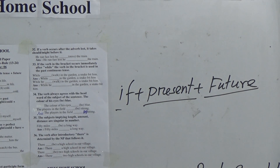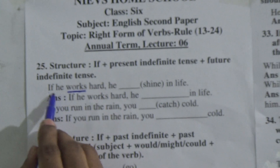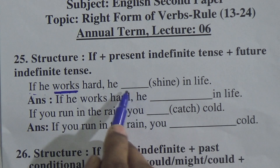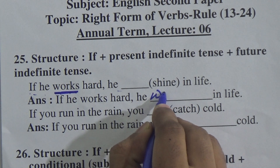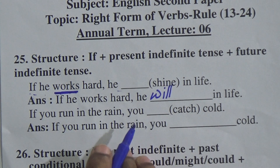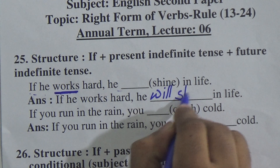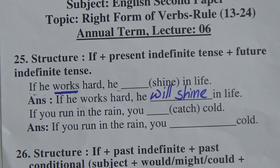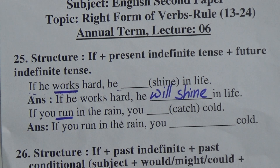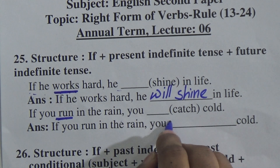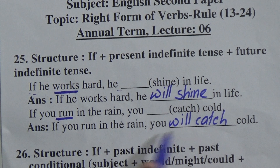So after 'if', if present indefinite tense comes, we will do future tense in the next clause. For example: 'if he works' — future indefinite tense follows. After the subject, shall or will comes, and after shall or will we always put the present form of the verb. Example: 'He will shine in life.' If you run in the rain, present indefinite comes, so we make it future indefinite: 'If you run in the rain, you will catch cold.'